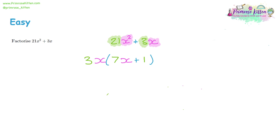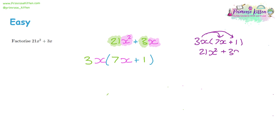An important step with factorization is to expand the brackets afterwards to check your answer. If we take 3x times (7x + 1): 3x times 7x is 21x², and 3x times 1 stays the same. We've clearly got back to our original question, so this is a really good way to check. If you don't get back to the original, you've made a mistake.